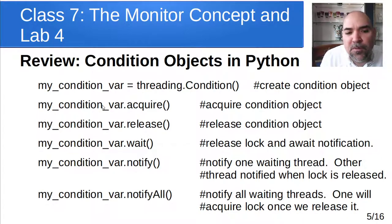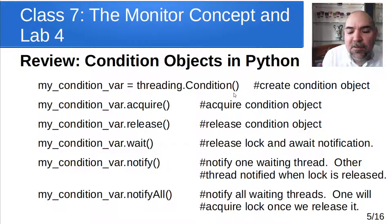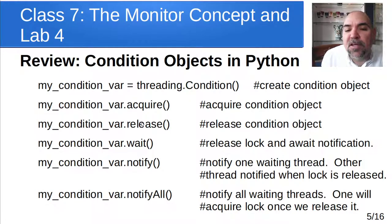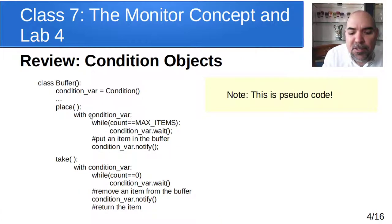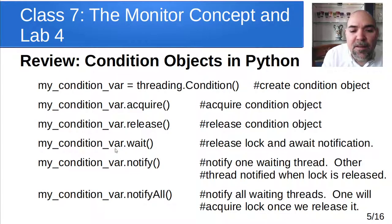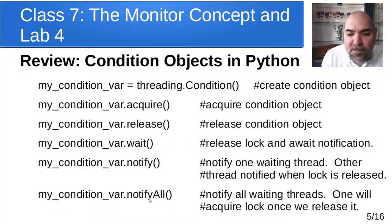We just make a condition object by saying threading.Condition — calling that class creates one of those objects. It has acquire and release, and you can use it just like a lock does, or you can use a 'with' block. And then it has wait and it has notify. There's also notify_all that can wake everybody up at once, and one of them will acquire that lock and continue.